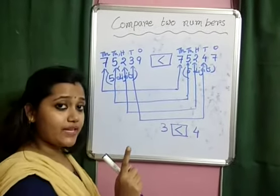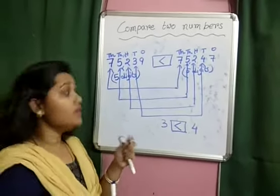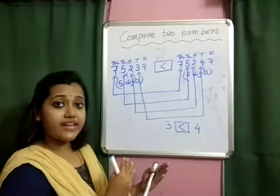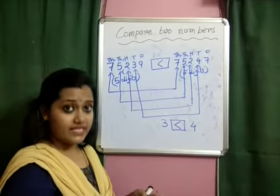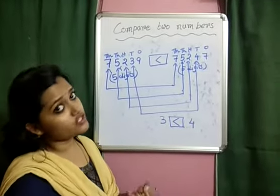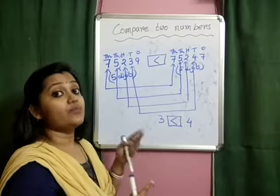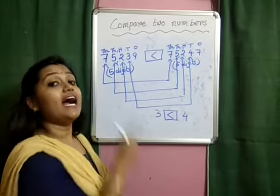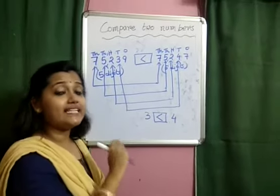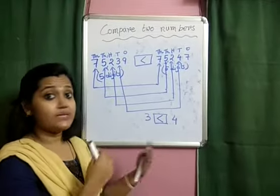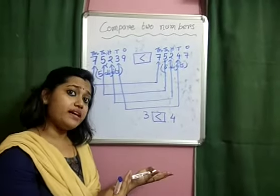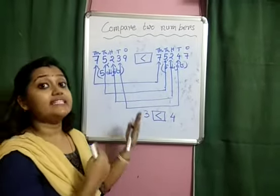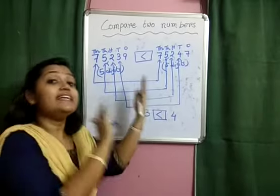Once again, from the beginning: the first step is to count the total number of digits. If the number of digits are different, then whichever number has more digits is bigger. Second case: when the number of digits are equal, compare the highest place. Whichever digit under that highest place is bigger — that corresponding number is also bigger. Third case: if the highest place digits are the same, compare the next highest place.